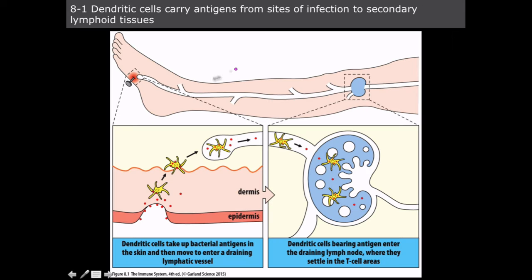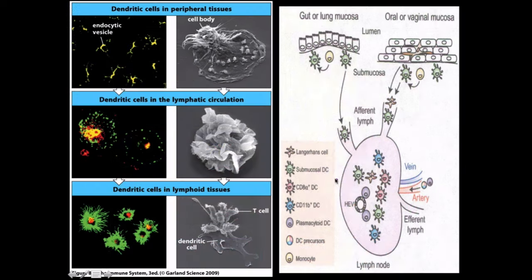Dendritic cells are going to carry the antigens from the site of infection — it's always a guy stepping on a nail for whatever reason — to the secondary lymphoid tissues, in this context the nearest draining lymph node. They're going to take the bacteria from the skin and move it into a draining lymphatic vessel, and from there present it to T-cells, usually in the T-cell areas, otherwise known as the T-cell zones.